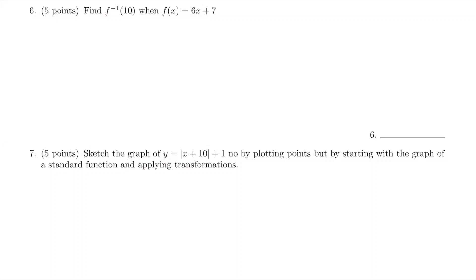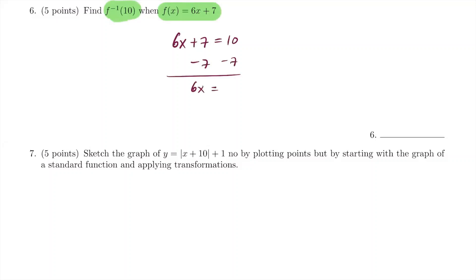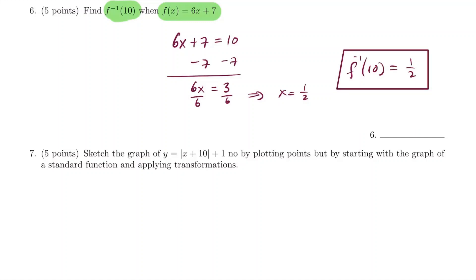For number 6, we want to find f inverse of 10, where f(x) = 6x + 7. If 10 is the input for the inverse function, that means it's the output for the original function. So we set 6x + 7 = 10, subtract 7 to get 6x = 3, then divide by 6: x = 1/2. So f inverse of 10 equals 1/2.